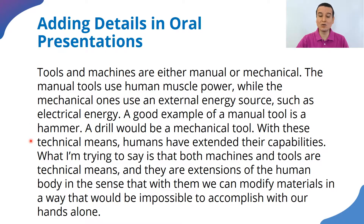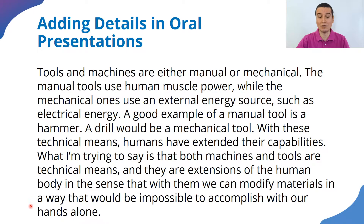A good example of a manual tool is a hammer; a drill would be a mechanical tool. With these technical means, humans have extended their capabilities. Both machines and tools are technical means and they are extensions of the human body, in the sense that with them we can modify materials in a way that would be impossible to accomplish with our bare hands alone.